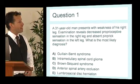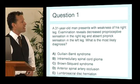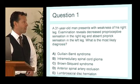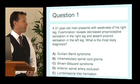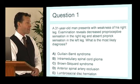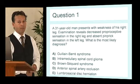Question one. A 31-year-old man presents with weakness of his right leg. Examination reveals decreased proprioception sensation in the right leg and absent pinprick sensation in the left leg. What's the most likely diagnosis? Is it A, Guillain-Barré syndrome, B, an intramedullary spinal cord glioma, C, Brown-Séquard syndrome, D, anterior spinal artery occlusion, or E, a lumbosacral disc herniation? I'll give you a minute to think about that.